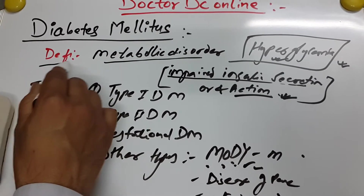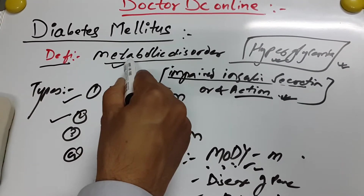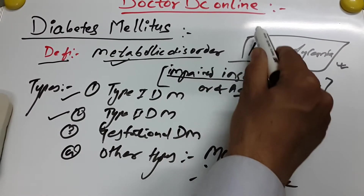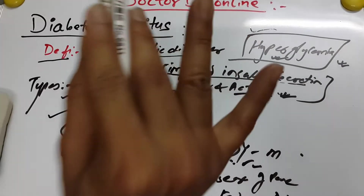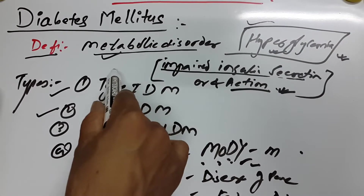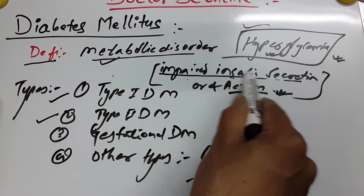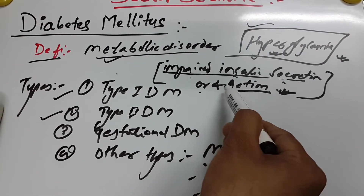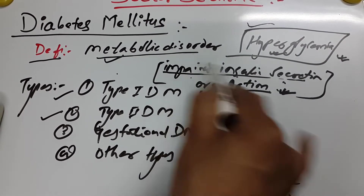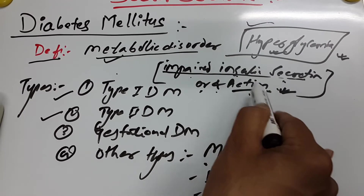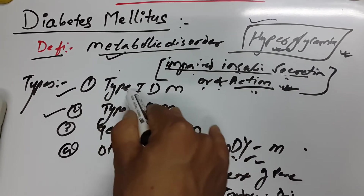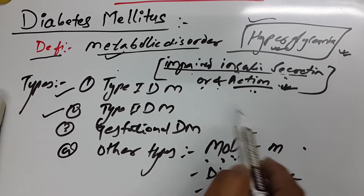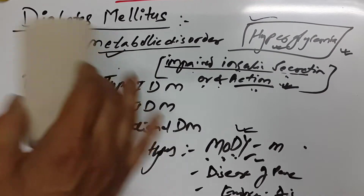To repeat: diabetes mellitus is a metabolic disorder characterized by hyperglycemia, resulting from impaired insulin secretion — meaning no or reduced insulin secretion — or impaired insulin action. The four types are: Type 1, Type 2, gestational, and other types including MODY. You need to remember these.